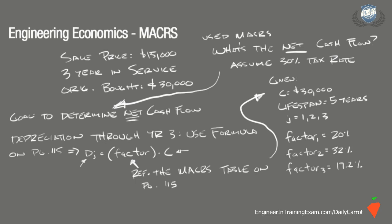So through 3 years, the cumulative depreciation percentage is 71.2%. Plugging these values into the equation, we find that the cumulative depreciation over 3 years is 0.712 times $30,000, which is equal to $21,360. So the cumulative depreciation over 3 years for this piece of equipment is $21,360.